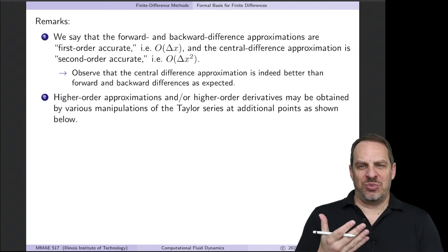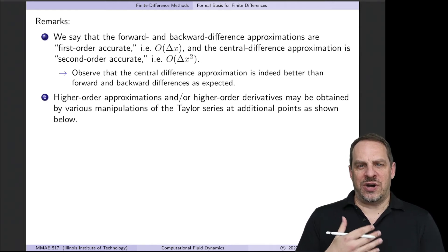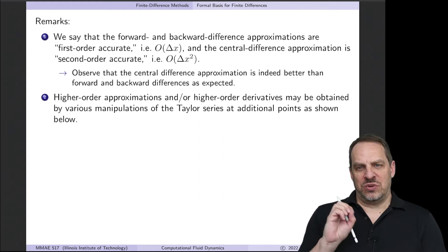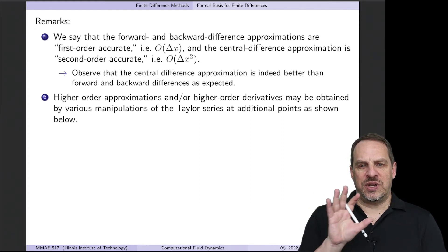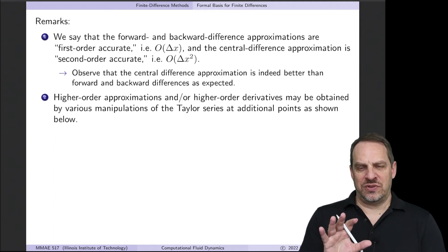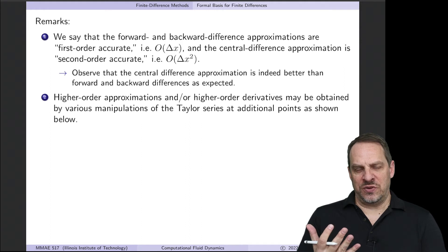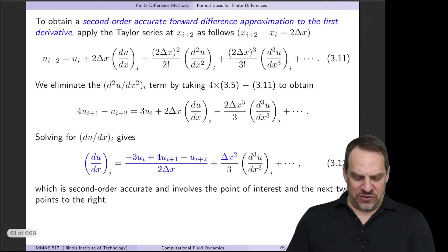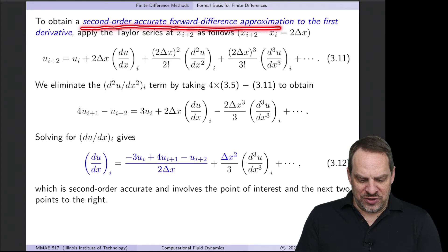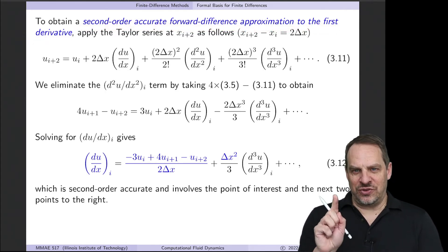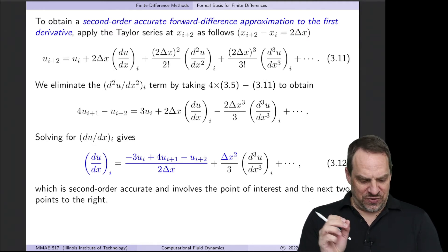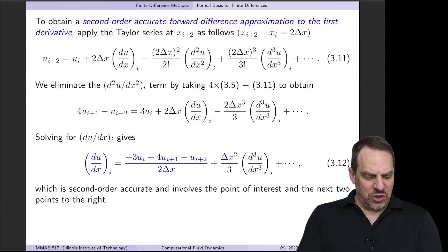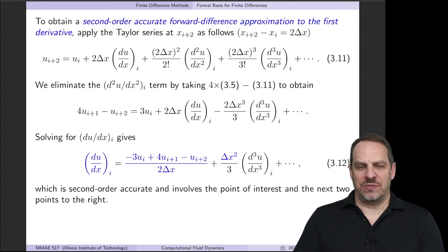We can do two things: go to higher order approximations for a given derivative, or go to higher order derivatives — since we also need the second derivative for our extended fin equation. What if we want a forward difference approximation that is second order accurate instead of first order? We already have a first order accurate forward difference approximation; now we want a second order accurate forward difference approximation for the first derivative.